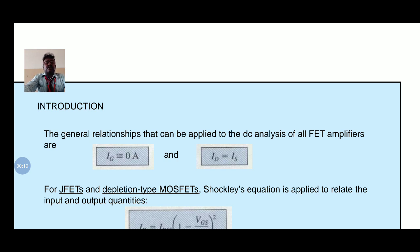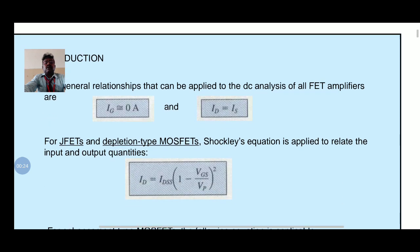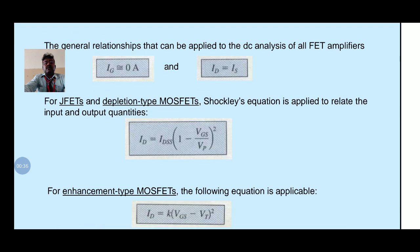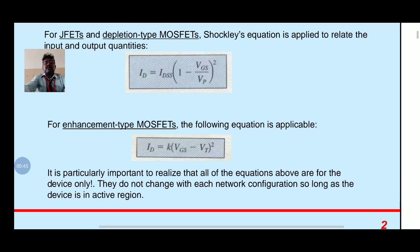The general relationship that can be applied to the DC analysis of all FET amplifiers is IG equal to 0 amps and ID equal to IS. We also have to know about Shockley's equation, which is applied to relate the input and output quantities: ID equal to IDSS into 1 minus VGS divided by VP, the whole square. For enhancement type MOSFET, the following equation is also applicable: ID equal to K into VGS minus VT, the whole square.